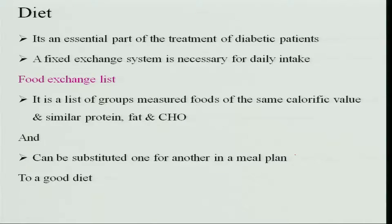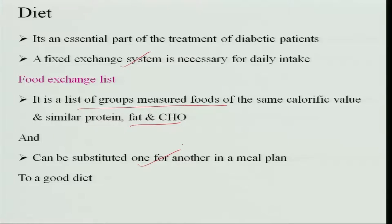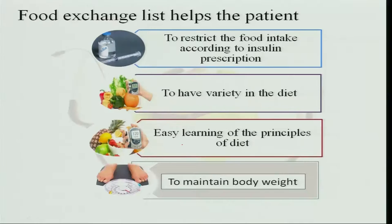Diet is an essential part of treatment of diabetes, so there should be a fixed exchange system which is essential for the patient to follow the daily diet. A food exchange list is a list of groups of measured foods giving the same amount of calories and almost the similar amount of proteins, fats, and carbohydrates. If the patient has this list, he can select any one of the foods which gives him an equal amount of energy, and it can be substituted for one another in a diet so that the patient has a satisfactory diet every day. This food exchange list helps the patient to restrict food intake according to the insulin prescription, provides variety in diet, and makes it easy to learn the principles of diet and maintain body weight.